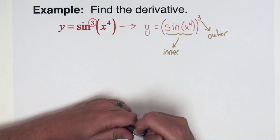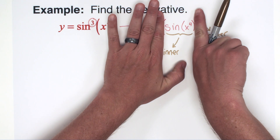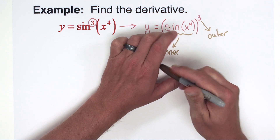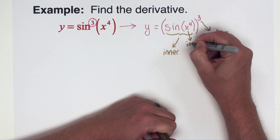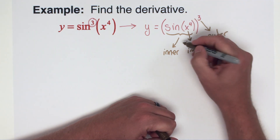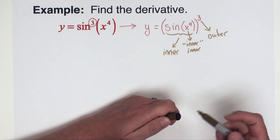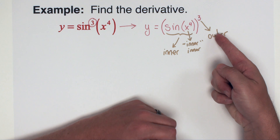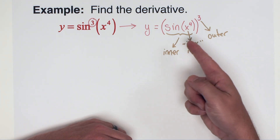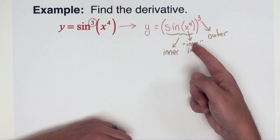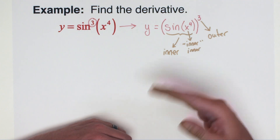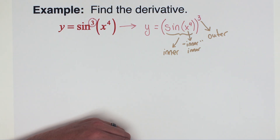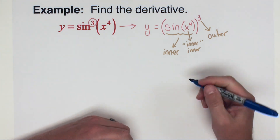If I look at that inner function by itself, I see that x to the fourth is inside of sine — so it's almost like we have an inner inner function. Layer-wise and step-wise, I have to do the derivative of the outer power first, then the derivative of sine, then the derivative of x to the fourth. Think of it as peeling back the layers: peel back as many layers as you can, and as you get to a further interior layer, just keep differentiating as you go.